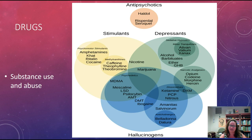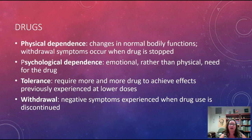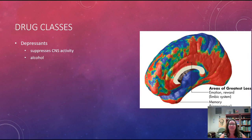Now we'll briefly cover drugs — substances that alter our consciousness. Key terms include: physical dependence (the body changes its function and withdrawal symptoms occur when stopping), psychological dependence (an emotional need for the drug), tolerance (needing more of the drug to achieve the same effect), and withdrawal (symptoms experienced after discontinuing the drug, such as the body adjusting after stopping cocaine).